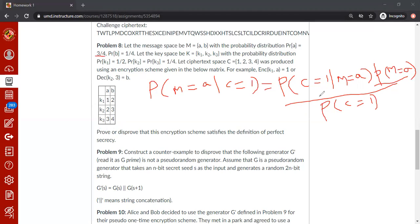We need to find the probability of c equal to 1, and then probability of c equal to 1, given m equal to a. How do we do that? We can easily find the probability that c is equal to 1 first.